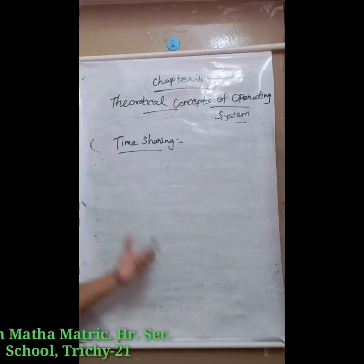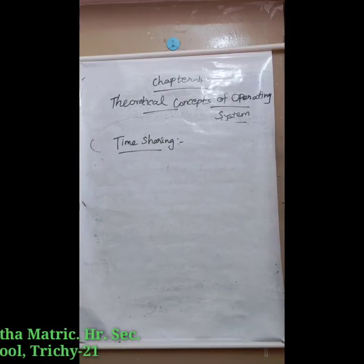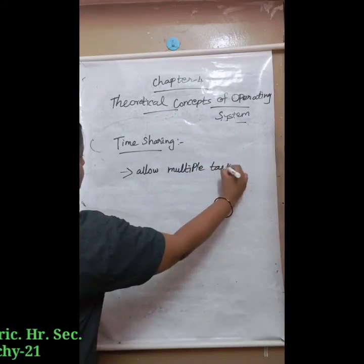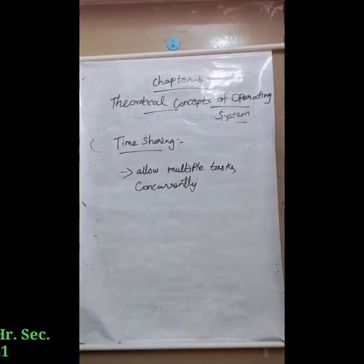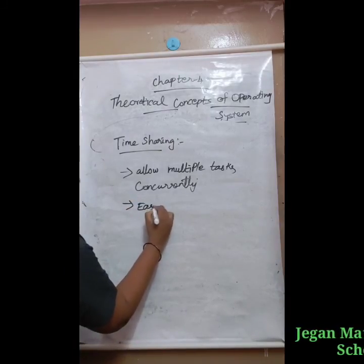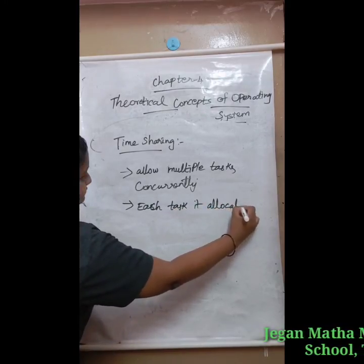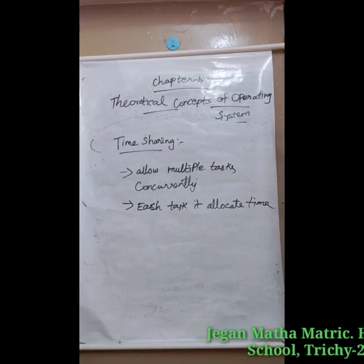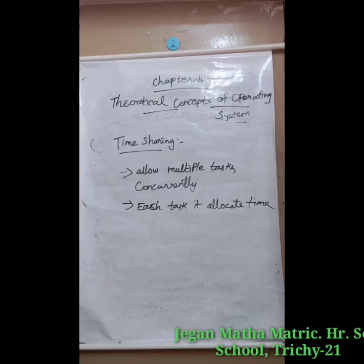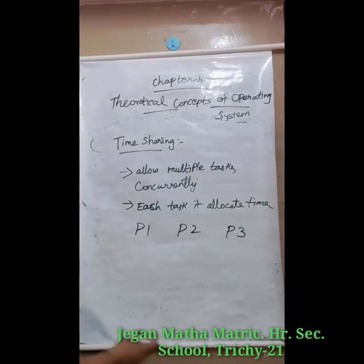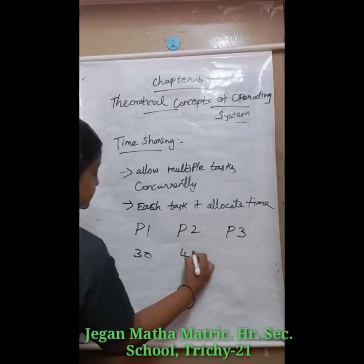Time sharing is one of the important features in the operating system. It allows execution of multiple tasks or processes concurrently — at the same time, we can do many works. For each task, a fixed time is allocated, and this division of time is called time sharing. The processor switches practically between various processes after the time elapsed or the process is completed. For example, assume three processes: process 1 allocated 30 minutes, process 2 allocated 40 minutes, and process 3 allocated 50 minutes.